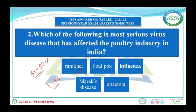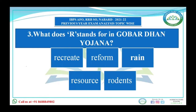The next question is: what does 'R' stand for in the GOBAR-DHAN scheme? The options are recreate, reform, resource, or proteins. The GOBAR-DHAN scheme stands for Galvanizing Organic Bio-Agro Resources Dhan. The answer is 'Resource.' This scheme was launched under the Ministry of Water and Sanitation at NDRI Karnal. Its aim was to give a positive impact on village cleanliness and generate wealth and energy from cattle and organic waste.